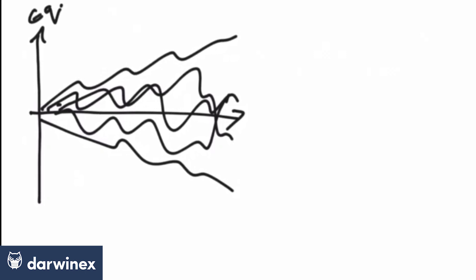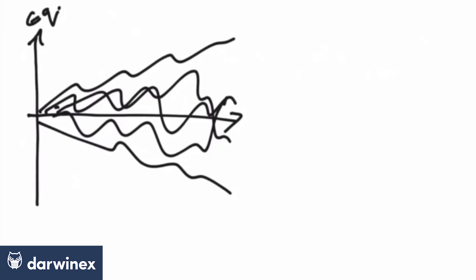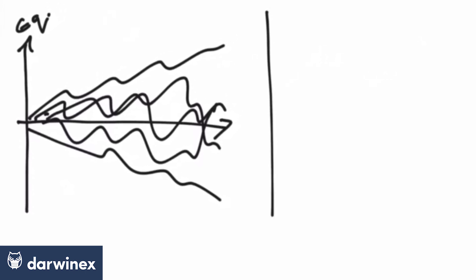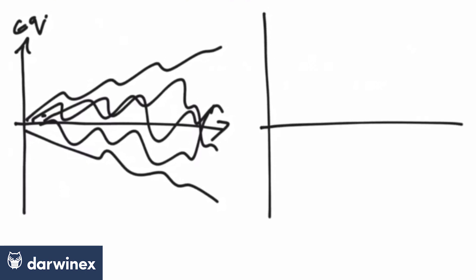This here is our equity. Now, how are the results of these distributed? Well, if we draw a curve